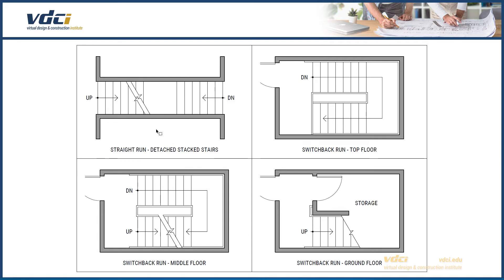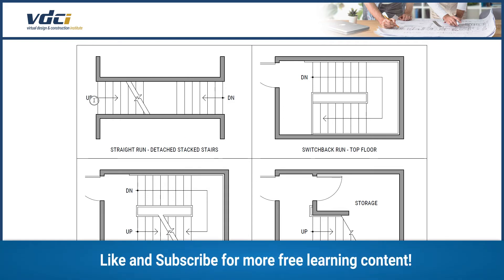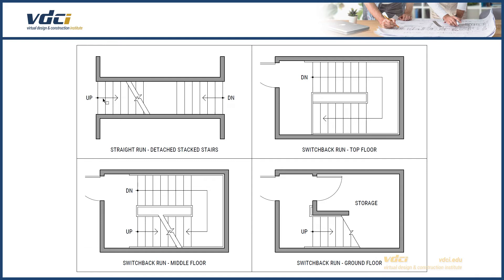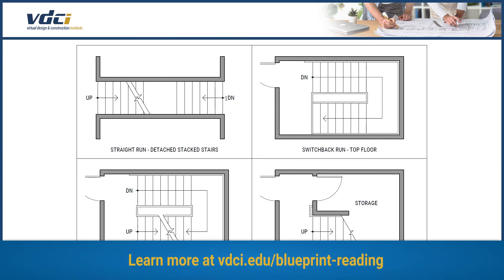Let's look at the first stair. Where you see text — either 'up' or 'down' — this is where you can picture yourself standing. If you follow the arrow, you are either walking up the stair treads or walking down the stair treads. So on this floor plan we have an 'up' and a 'down,' and these two points are on the same level. Standing at the 'up' text, you can walk up the stairs; going around to the 'down' text, you can walk down the stairs.